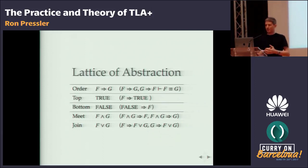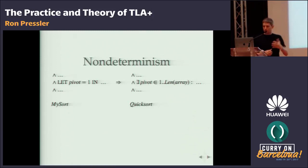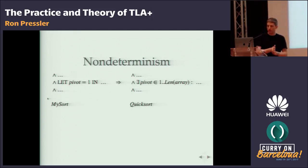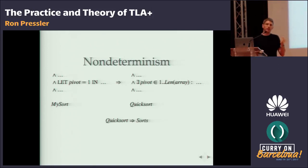Going back to QuickSort: we can now define QuickSort precisely and mathematically, expressing the non-determinism of picking any pivot. We can also specify a more detailed implementation where the pivot is always the first element, and show that this implementation is a refinement of the general QuickSort. If we prove that QuickSort sorts regardless of pivot choice, and show that our specific program is a refinement of QuickSort, then by the transitivity of implication we automatically get that our specific program sorts.